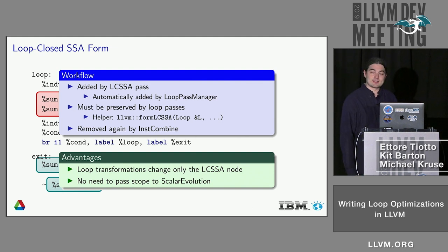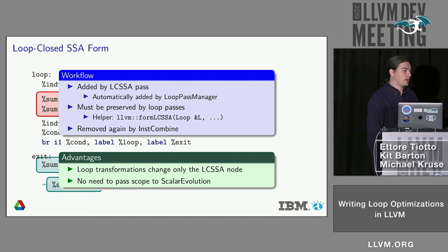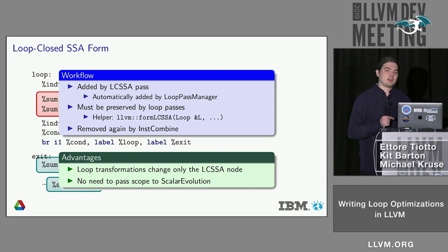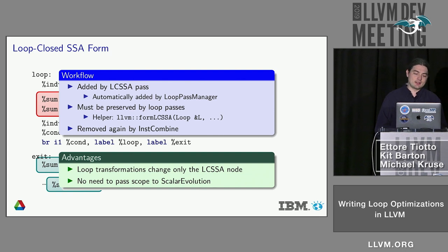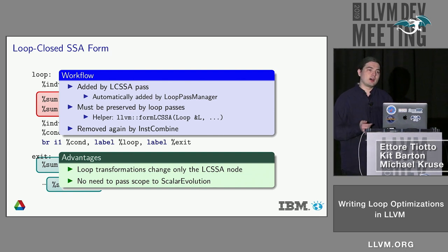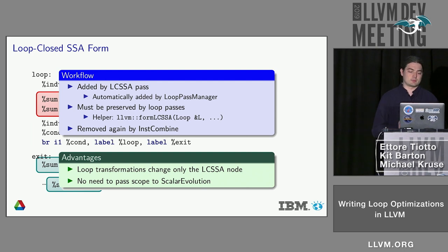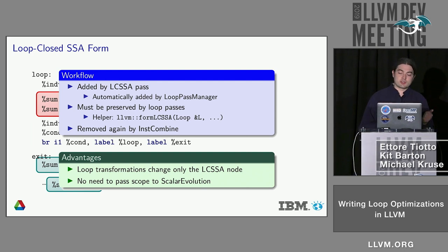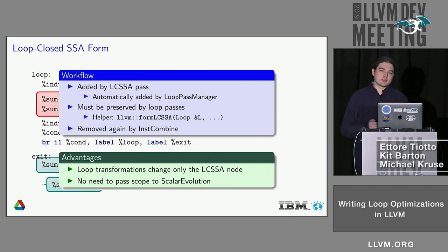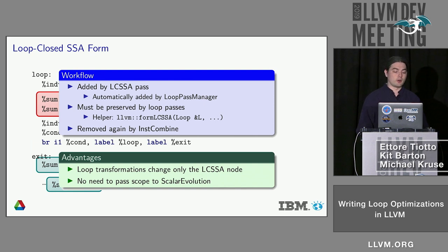There is an LCSSA pass which will convert your bitcode into LCSSA form, adding phi instructions with a single entry. If you have a loop pass, you must also preserve it, which is one of the invariants of the loop pass manager. When you execute the inst-combine pass, it will be removed again — it disappears. So it's a temporary form.